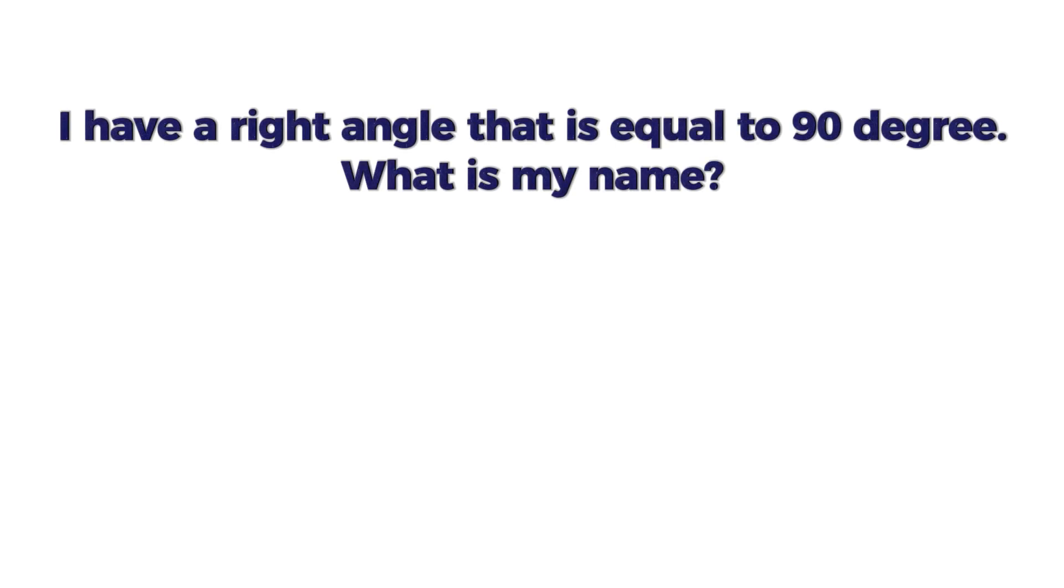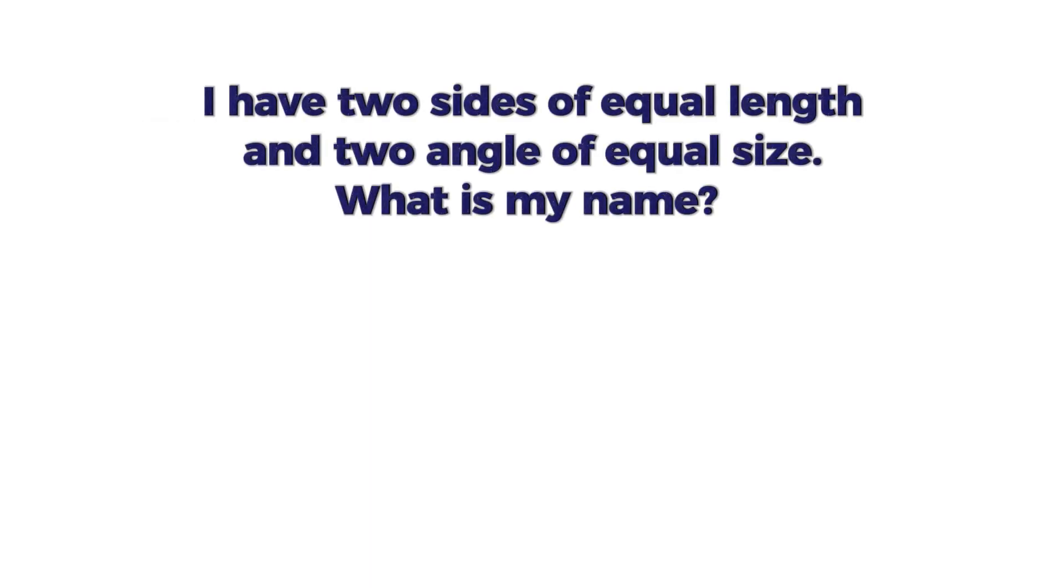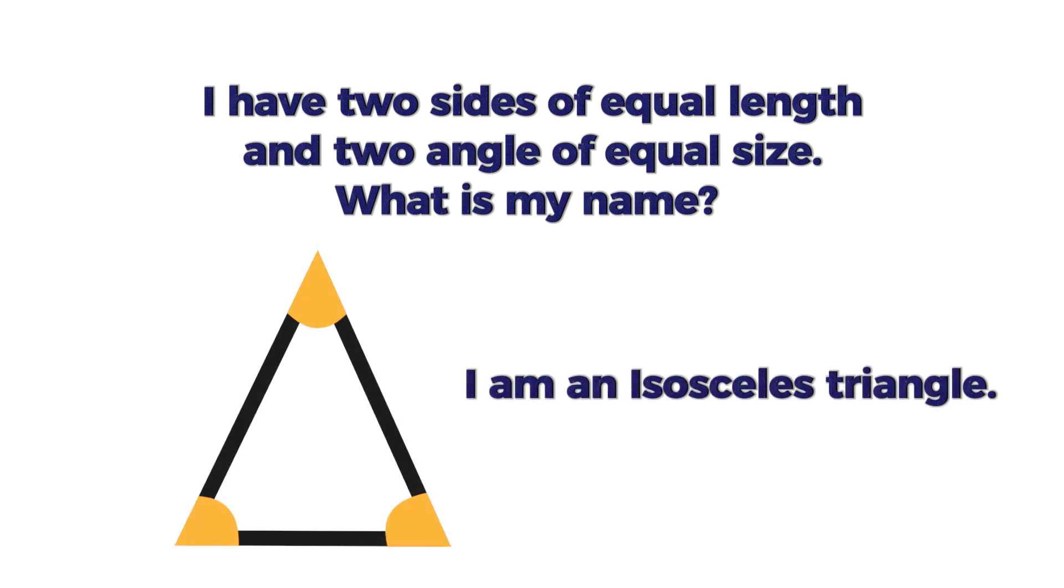I have two sides of equal length and two angles of equal size. What is my name? I am an isosceles triangle.